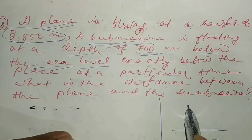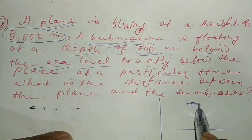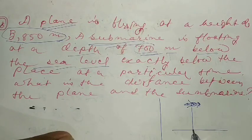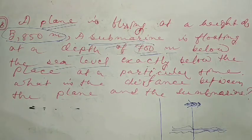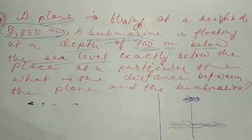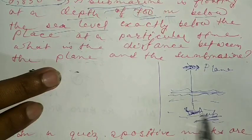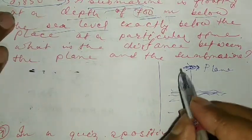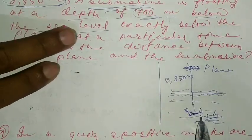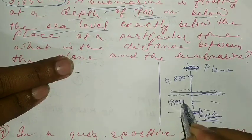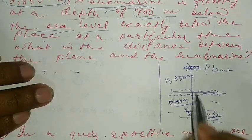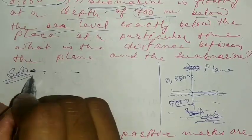I will explain this with a figure. The plane is flying in the air. This is the sea level. This is the submarine, floating 700 meters below. So the plane is 5850 meters above and the submarine is 700 meters below.